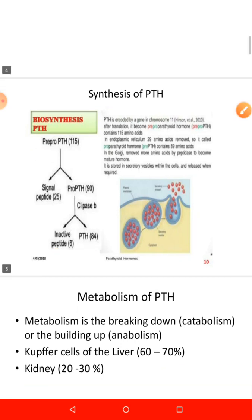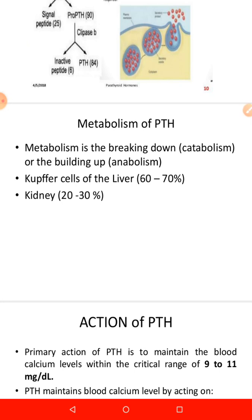Once PTH has been synthesized, how is it metabolized? We don't want PTH levels to continually remain high in the blood, so it has to be metabolized. It is metabolized by the Kupffer cells of the liver by means of proteolysis. It can also be metabolized in the kidneys — about 20% of PTH is metabolized there — and the waste products are released in urine.